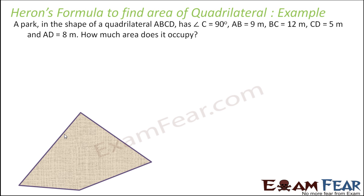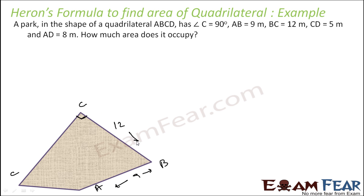Now a part is in the shape of a quadrilateral ABCD where angle C is 90 degrees. AB is 9 meters, BC is 12 meters, CD is 5 meters, and AD is 8 meters. We need to find the area of this quadrilateral.